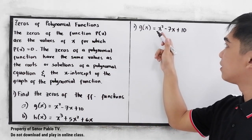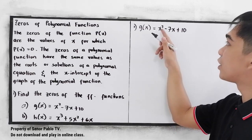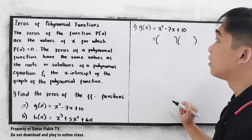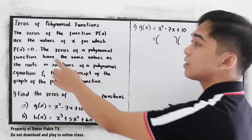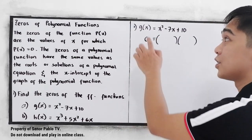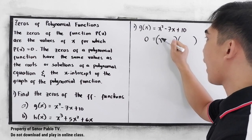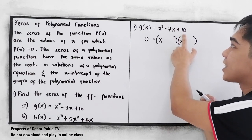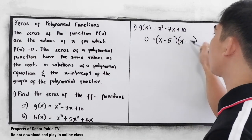Letter A is a quadratic function — we have a degree of 2. Therefore, we need to factor out the given, then get the value of x. So we need p of x equal to 0, so we can change g of x to 0. Now factor out. So we have x and x — our shortcut. Factors of positive 10 whose sum must be negative 7. So we have negative 5 and negative 2.